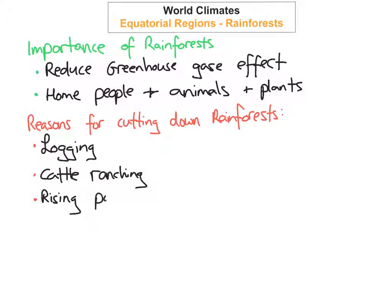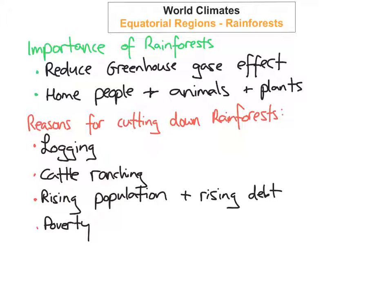The third reason is the rising population. Because the population has increased so dramatically in the last hundred years, rainforest is being cleared to make more agricultural land, and it's also been destroyed to help pay off national debt. The fourth reason is poverty — because people are poor and money is required, chopping down the rainforest is a good source of income, selling mahogany or other timber to the Western world where there is huge demand.